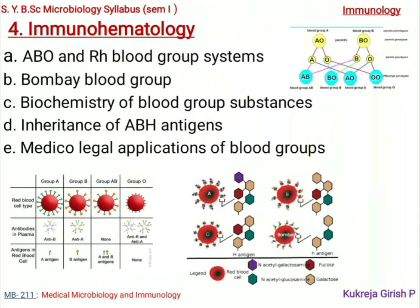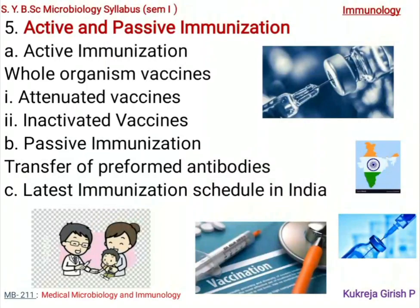Then we will talk about immune hematology, specifically blood group antigens. We will cover the ABO and RH blood group systems, the Bombay blood group type, the biochemistry of blood group substances, how these are inherited, how a typical blood group is inherited, and the medico-legal applications of these blood groups.